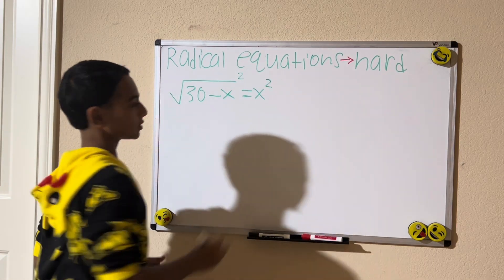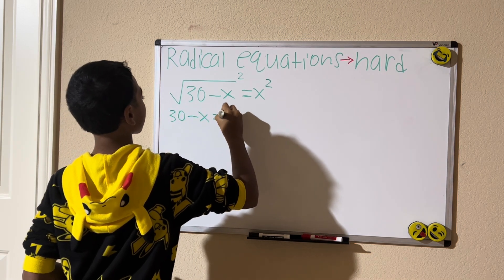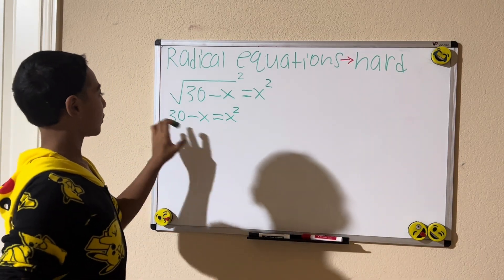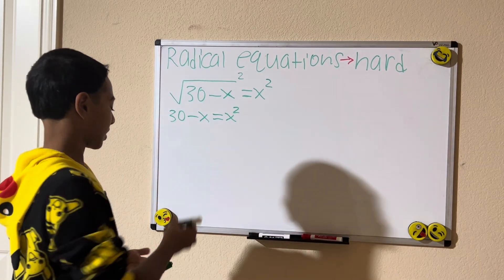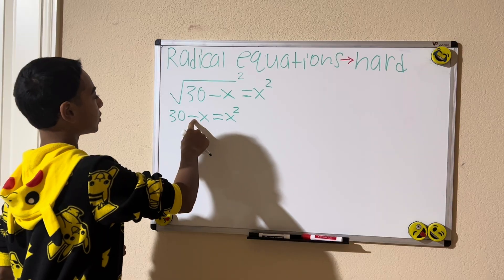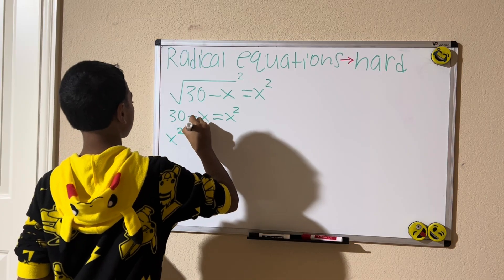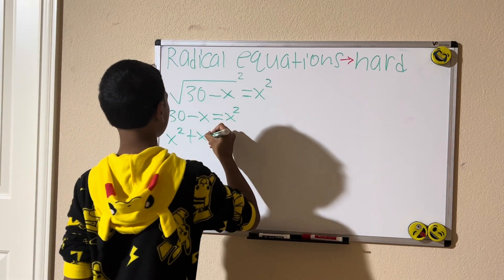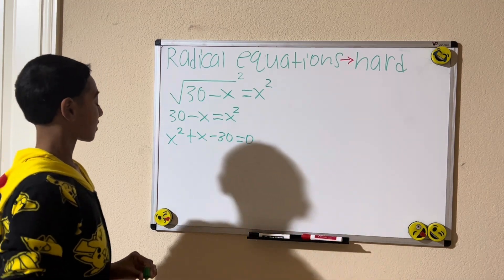How do we solve this? Same basic topic — we're going to square both sides of the equation, giving us 30 minus x equals x squared. Now we're going to rearrange the equation so that one side equals zero. I'm going to move the negative x to the right-hand side, so it becomes positive x. We have x squared plus x.